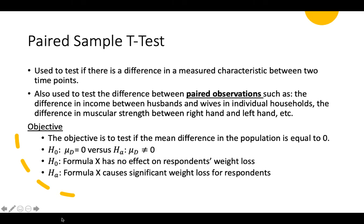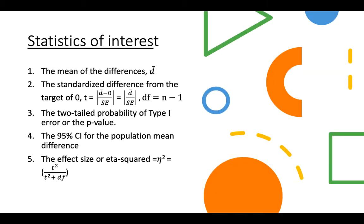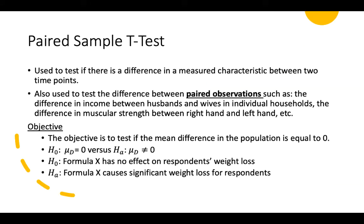It can be effectiveness, it can be before and after — it doesn't matter. It is still the same. These are the statistics of interest. When we talk about D, it's the differences. Your hypothesis has mu-D, or the mean for differences.